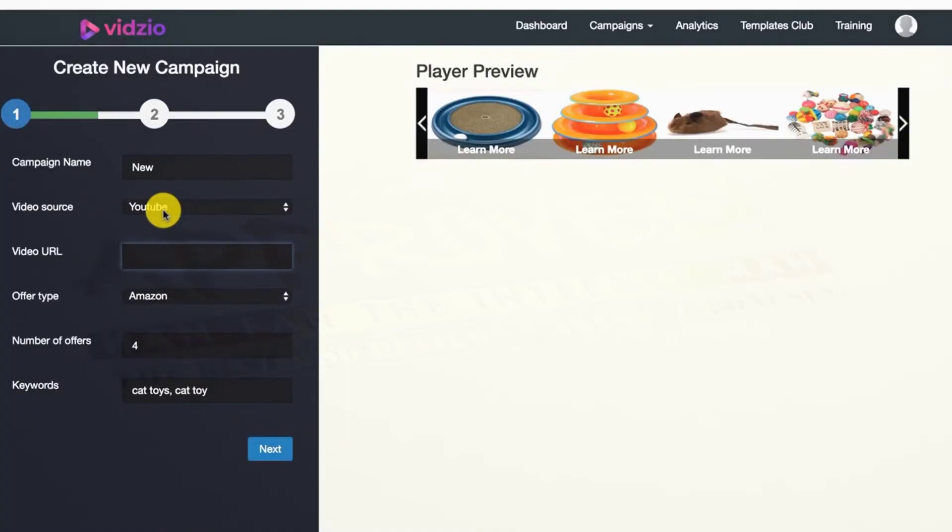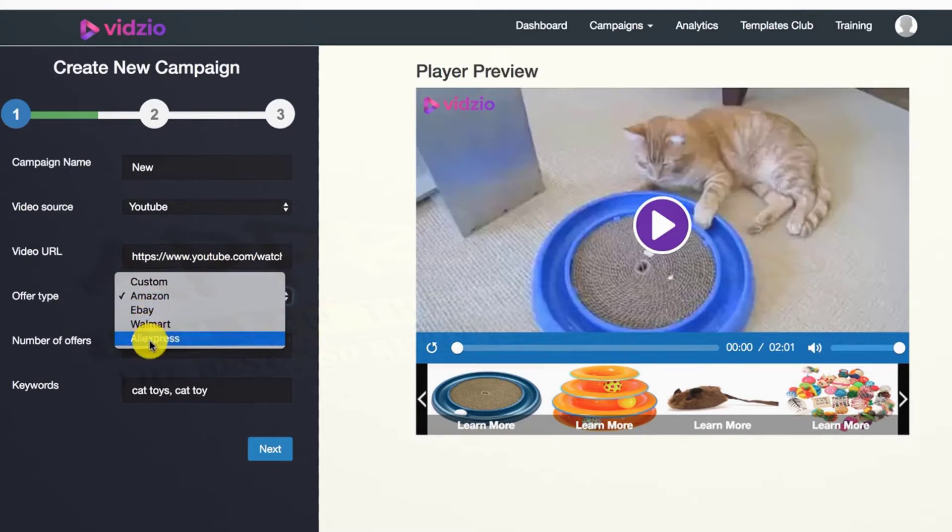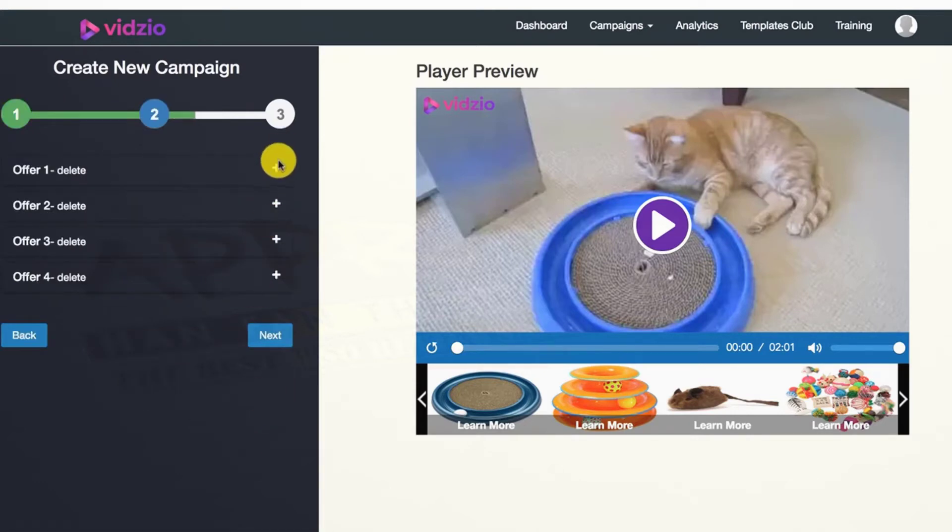Here's a quick breakdown of how it works. Log into the cloud-based software, enter any URL from YouTube or Vimeo or upload your own video related to your niche. Use the drop-down menu to select your preferred e-commerce platform—Amazon, eBay, AliExpress, and Walmart are all supported.